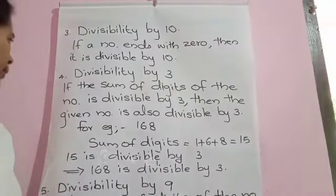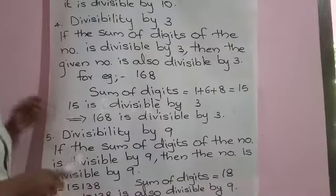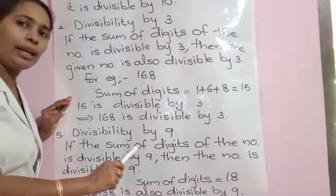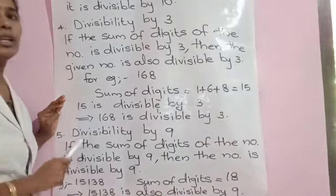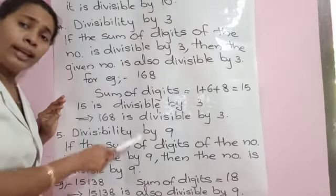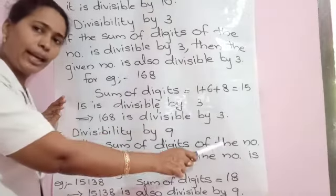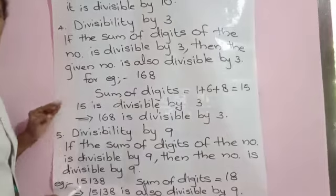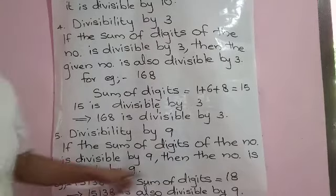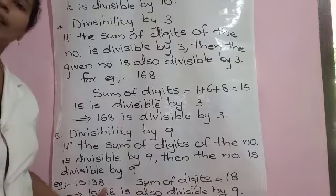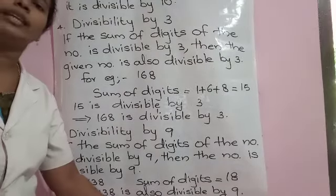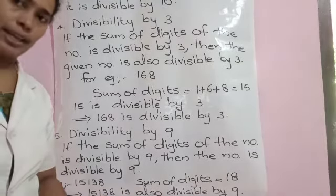Let us move to divisibility by 9, which is the same as divisibility by 3. The rule says: if the sum of digits of a given number is divisible by 9, then the whole number is divisible by 9. For example, the number 15,138 — its sum of digits is 18. Since 18 is divisible by 9, the big number 15,138 is also divisible by 9.